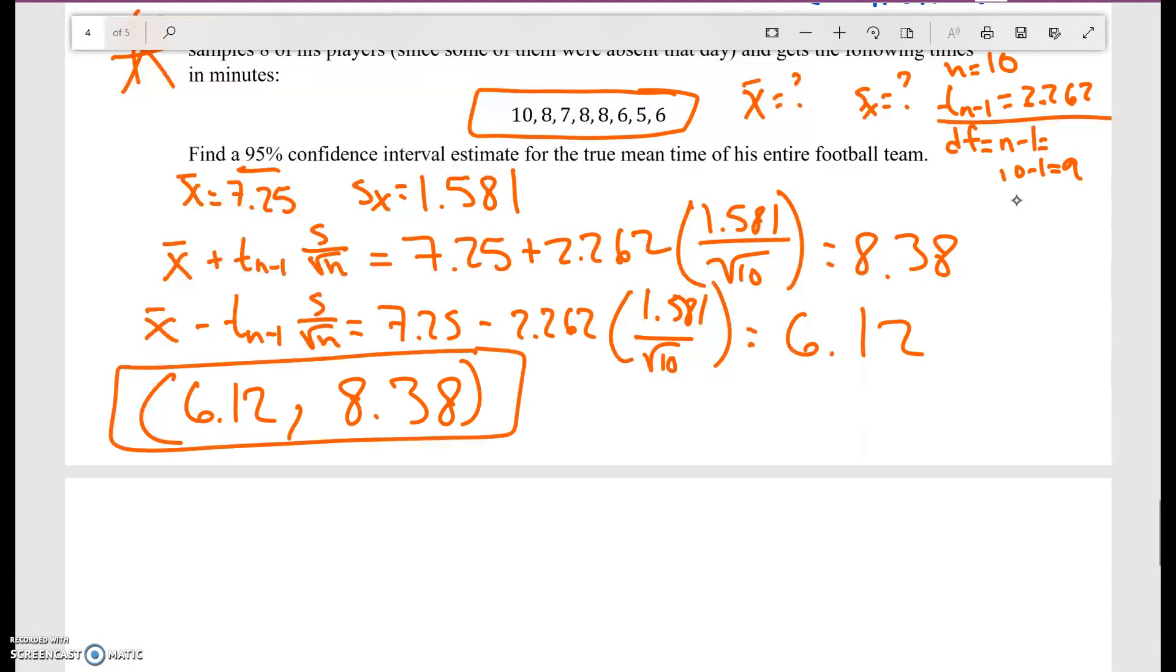Since they don't ask us to interpret it, we don't need to interpret it, but we can if we want to. We are 95% confident that the true mean time of the entire football team lies between these two numbers, between 6 minutes and 8 minutes.